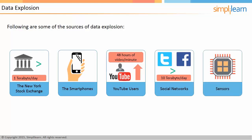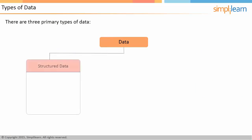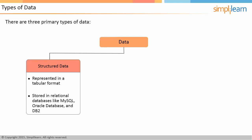There are more than 30 million networked sensors in the world, each transmitting data continuously. There are three primary types of data. The first is structured data, which can be represented in a tabular format and stored in relational databases like MySQL, Oracle Database, and DB2.